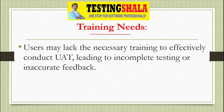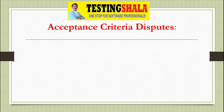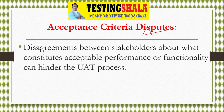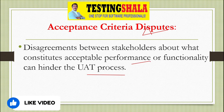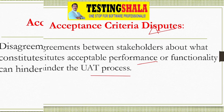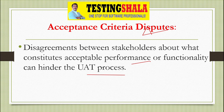The final challenge is acceptance criteria. If the acceptance criteria is not agreed upon, that becomes a big challenge. Whenever we start UAT, we must clearly define the entry and exit criteria. Failing to define these leads to disputes during functional as well as performance testing. It is always advisable to define criteria well in advance and discuss with all stakeholders to get a buy-in so that everyone is on the same page. These are the key challenges we normally face when performing user acceptance testing.